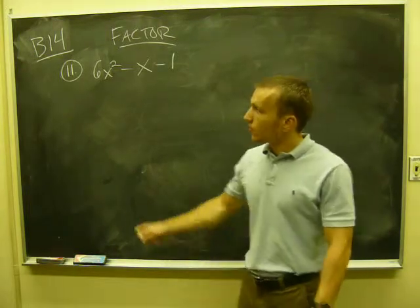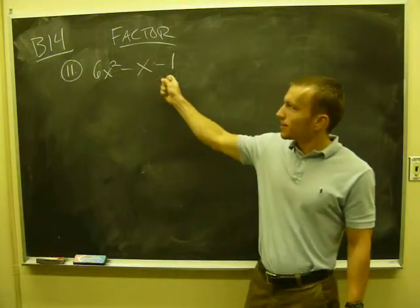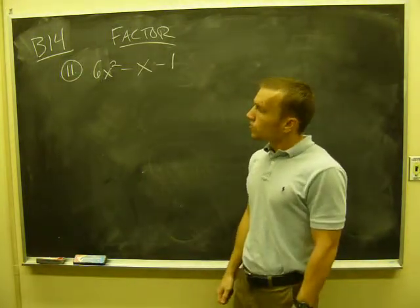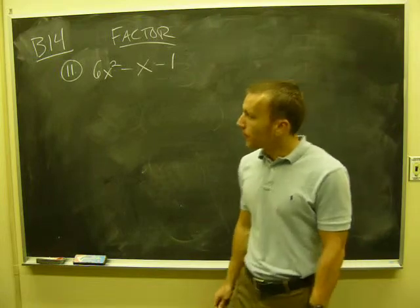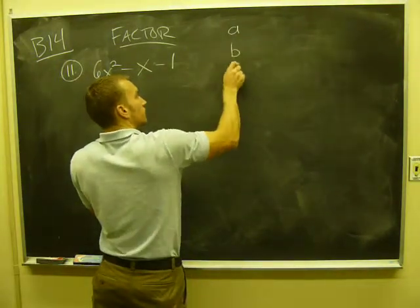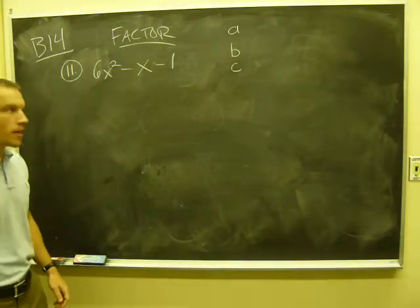Next thing we look for is this of the form ax squared plus bx plus c. If it's going to factor, then it's going to factor using this AC method. Remember, if you want, you can list your a's, b's, and c's. That might help you.